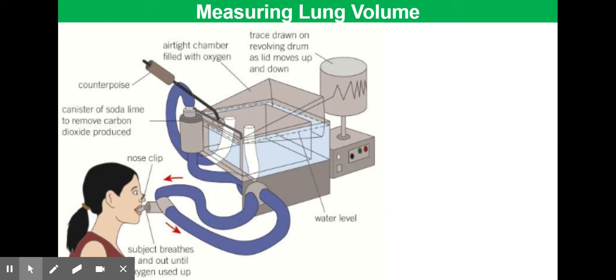Now this is a float chamber spirometer and it consists of a chamber of air or medical grade oxygen floating on a tank of water. During inspiration air is drawn from the chamber so that the lid will move down, and then during expiration the air returns to the chamber causing that lid to move up. Those movements can then be recorded on a data logger and that's shown as the trace being drawn on that revolving drum as the lid is moving up and down.